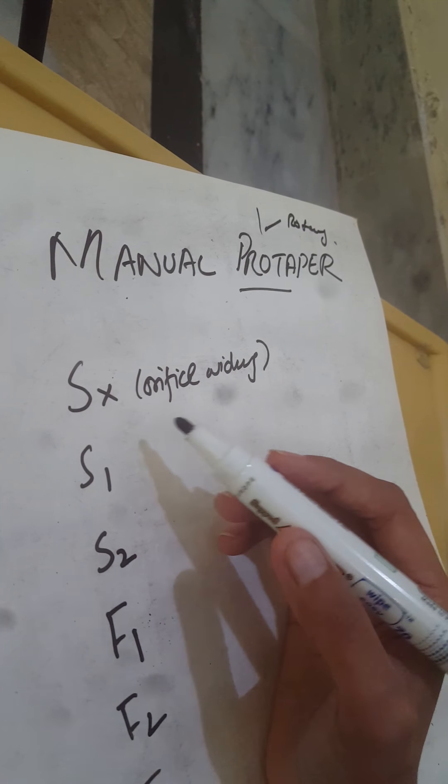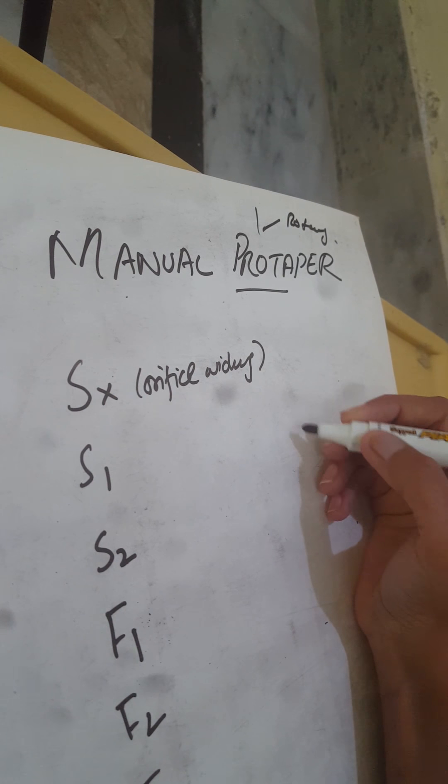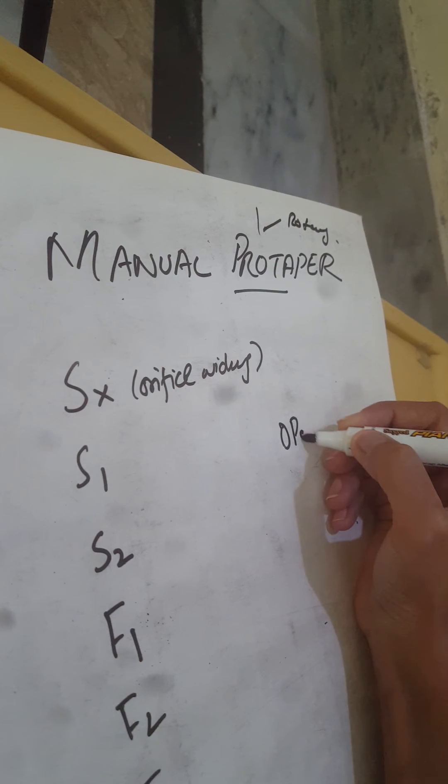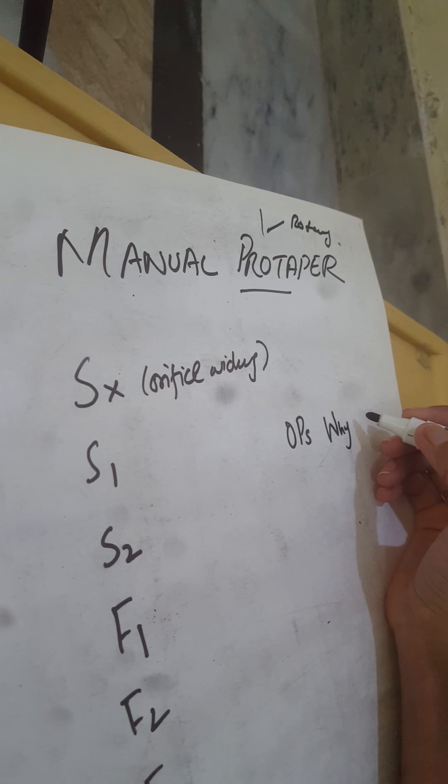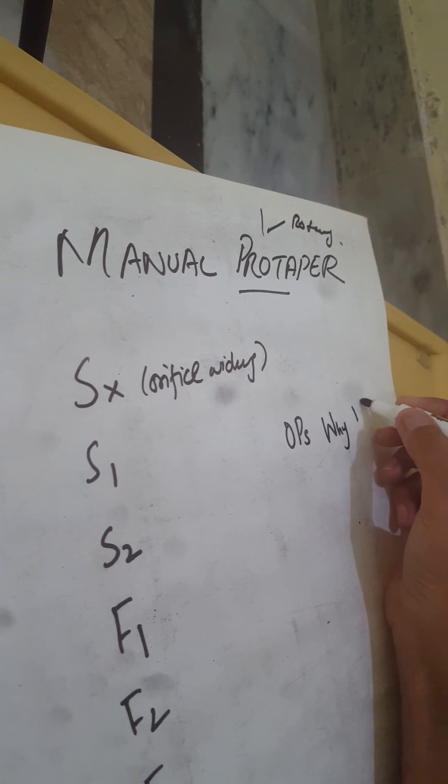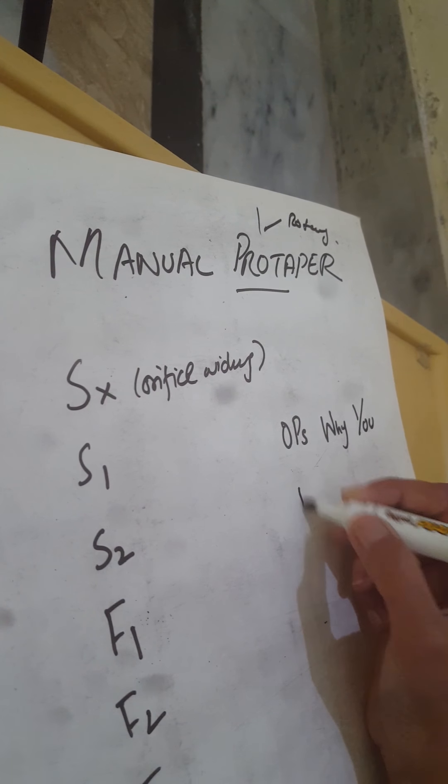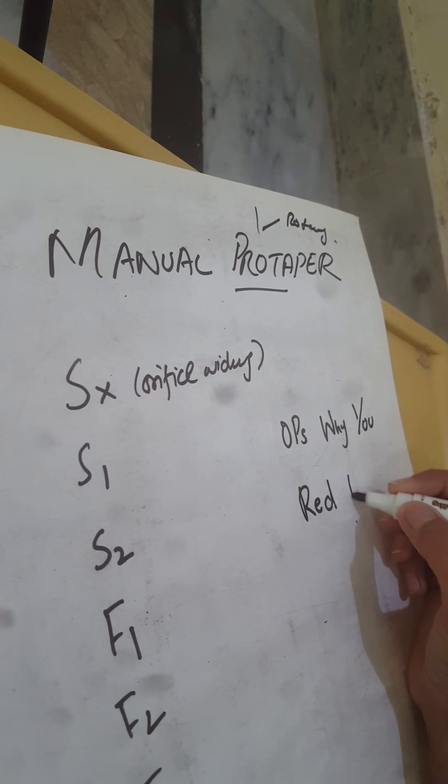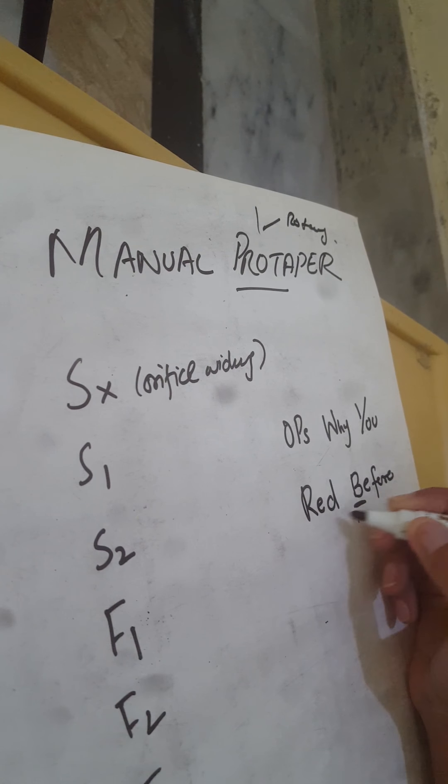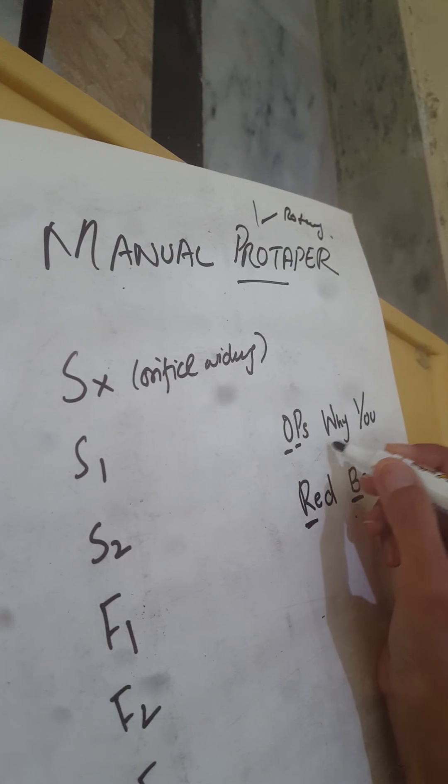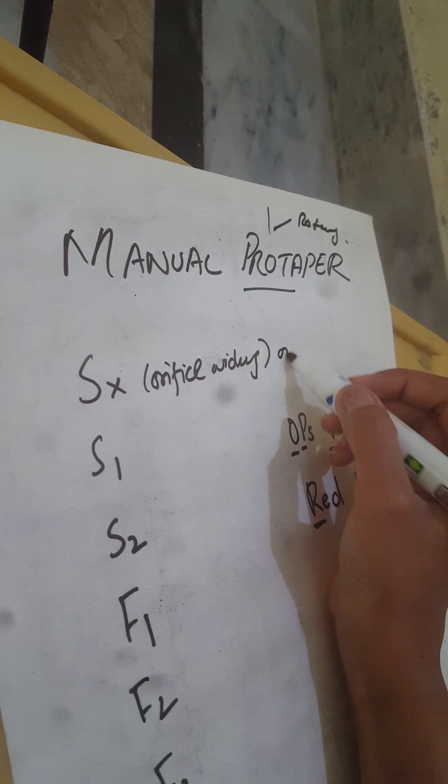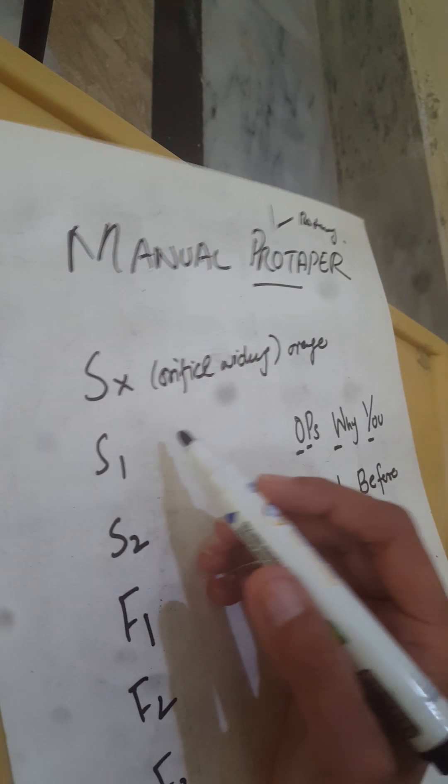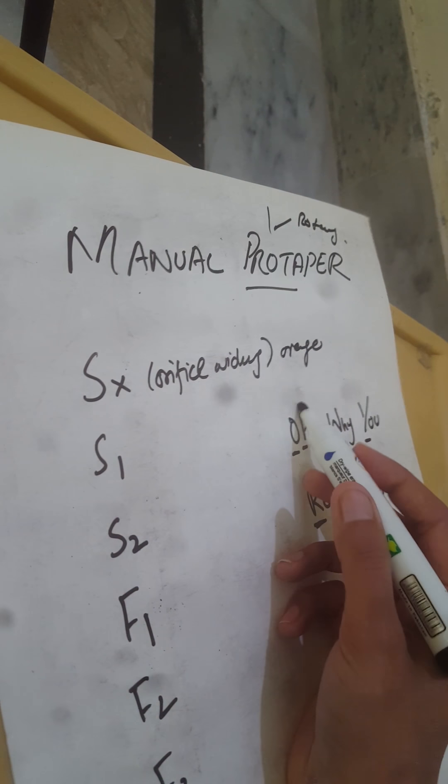So we have to remember this mnemonic: oops why i u u red before brown. O is for orange - sx is orange color, it is second.